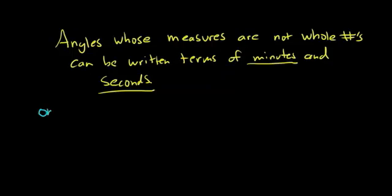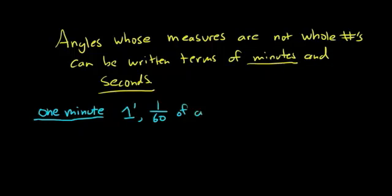So what is one minute? One minute, the notation we use is a one and we put a little dash. That means one minute and this is 1/60th of a degree. We can write this so we have that one minute is equal to 1 over 60 degrees. So if you had 60 minutes you would get one degree.